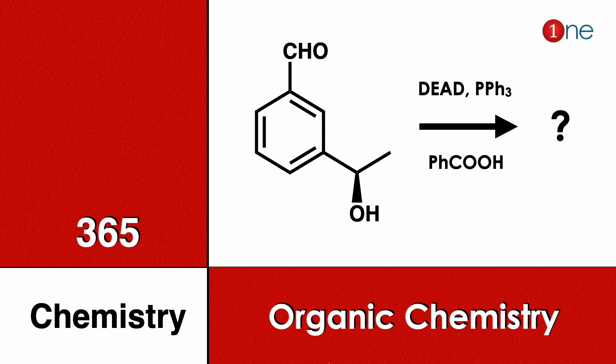Welcome to One Chemistry. This is the 365 Chemistry Series — organic chemistry questions for you. Here you have benzaldehyde; in the meta position you have an alcohol. You are using DEAD and phosphine and benzoic acid. You should find what will be the final product.